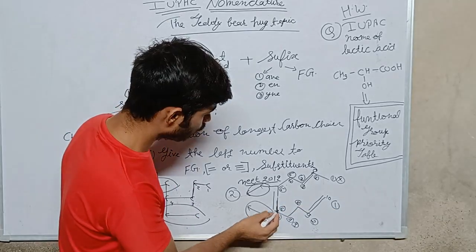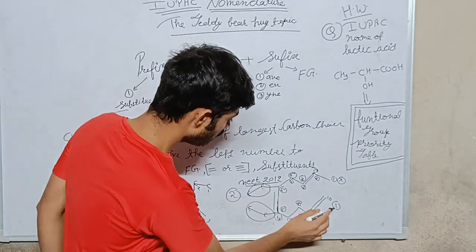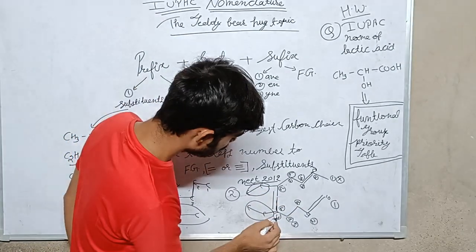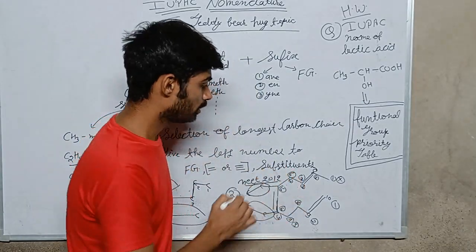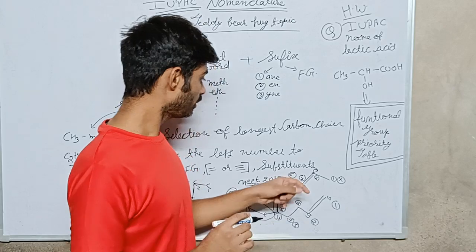2—sorry, 4, 5-diene, ethyl, 1, 4, and 7, dec for 10 carbons, tri-ene 1.